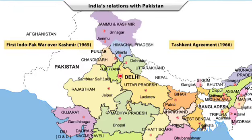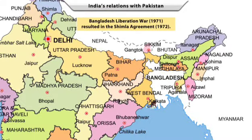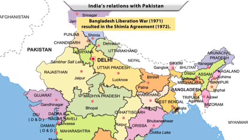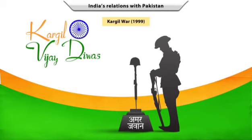However, the Tashkent Agreement did not yield any result in maintaining good relations between the two nations. Although the war of 1971 was about the liberation of East Pakistan — now Bangladesh — the issue of Kashmir nevertheless came up. The Shimla Agreement of 1972 did bring both countries onto the same platform to discuss these issues. In 1999, Pakistan-supported terrorists illegally entered Kargil in India.